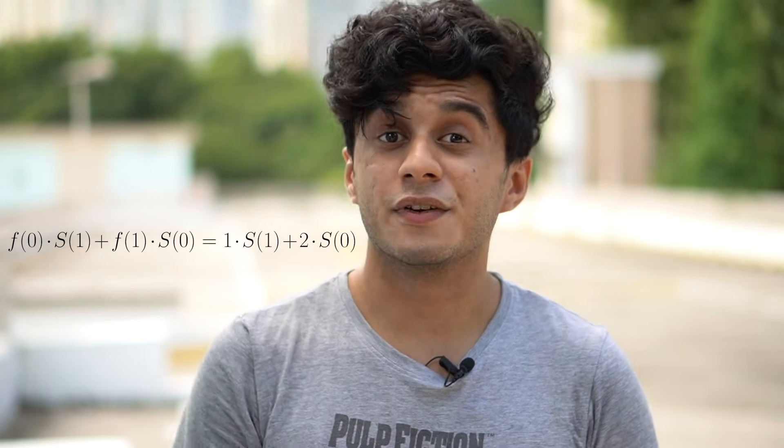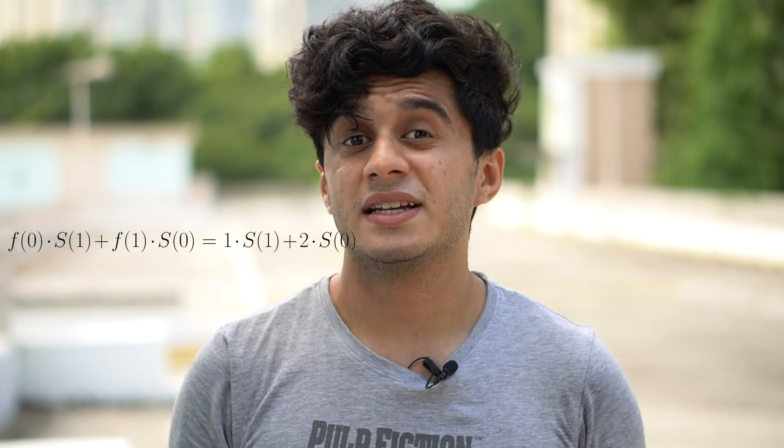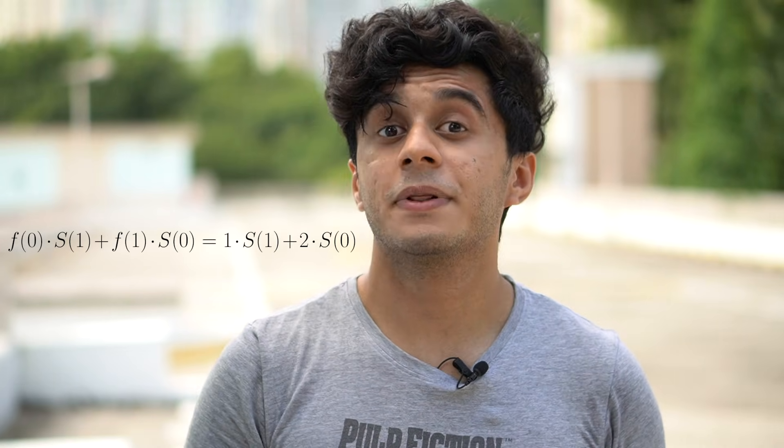So what about minute one? Let's say that f(1) is equal to two — at minute one we're setting off two fireworks. The amount of smoke at minute one should be f(0) times s(1), because those previous fireworks have had one minute to dissipate, plus the newly created smoke f(1) times s(0).